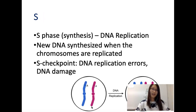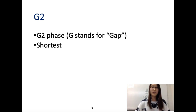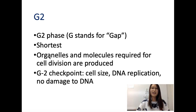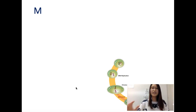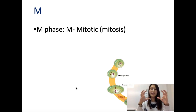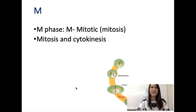G2: by the time we reach G2, we already have double the amount of DNA. Organelles and molecules required for cell division are produced, and the cell must be exactly big enough before division can happen. DNA replication errors and damage are checked again. Then we reach the M phase — the mitotic phase — which includes mitosis and cytokinesis. Cytokinesis is the step where a membrane forms between the two cells so they physically separate.